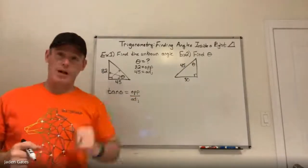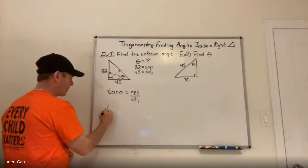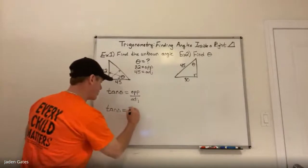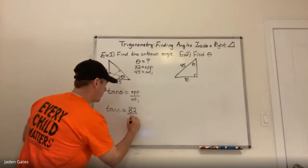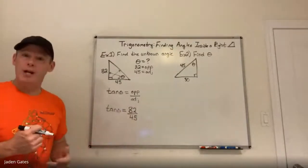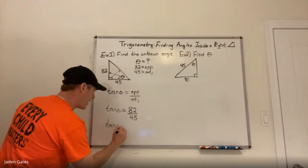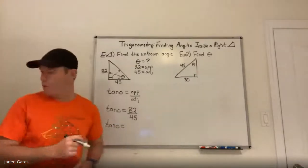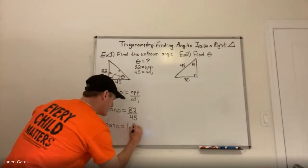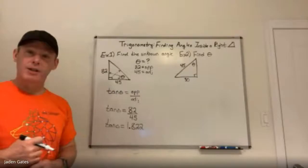Step three: plug our information in and solve for theta — that's where the ending gets a little different. We have tan theta equals opposite over adjacent, so the opposite 82 goes on top and adjacent 45 goes on the bottom. 82 divided by 45 gives us 1.822.